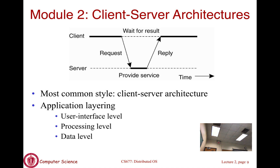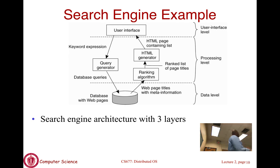Now, what we would like to understand is how to implement an application using the client-server model. A distributed application will actually have three components: a user interface component, a processing layer, and a data layer. We will see how to structure these components across the client and the server — which pieces will be at the client, which at the server. Let's take an example which is a search engine. You don't need to know what search engines do internally, but this example shows you how to build this three-layered application.